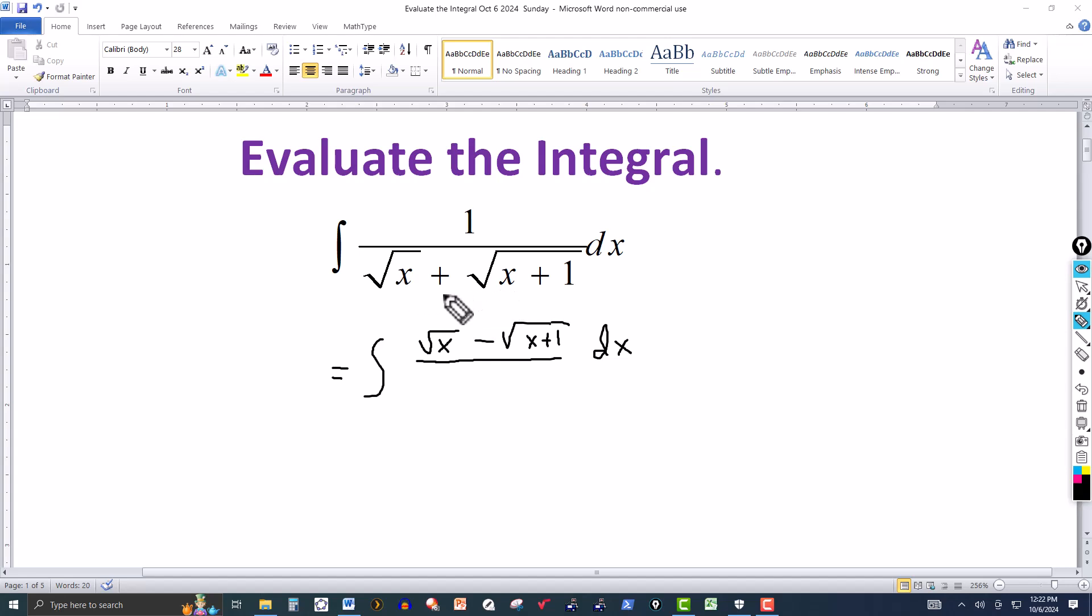And the denominator, if I multiply by the square root of x minus the square root of x plus 1, it'll give me the difference of the squares. So it'll be the square of radical x, which is just x, minus the square of the square root of x plus 1, which is x plus 1. So x minus x cancel. I get minus 1 here.